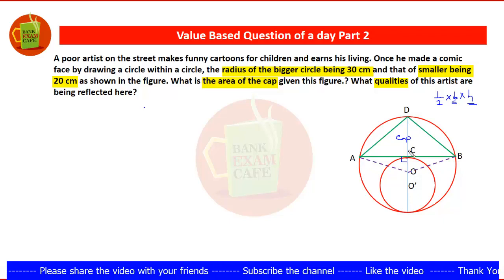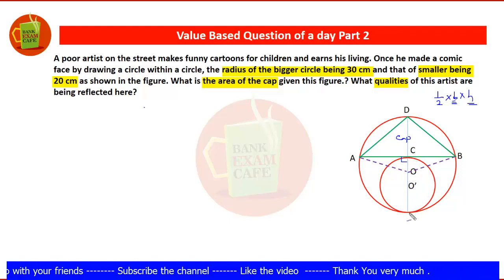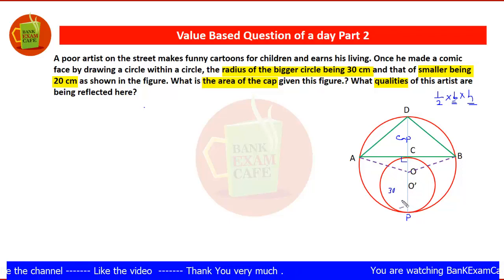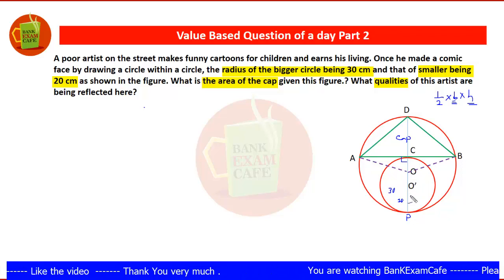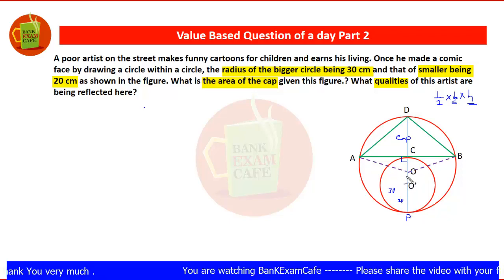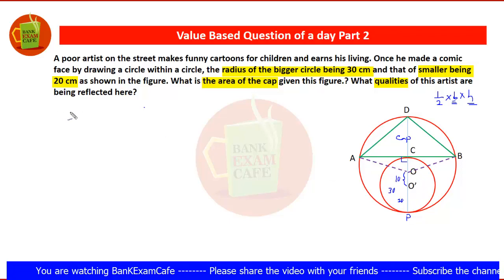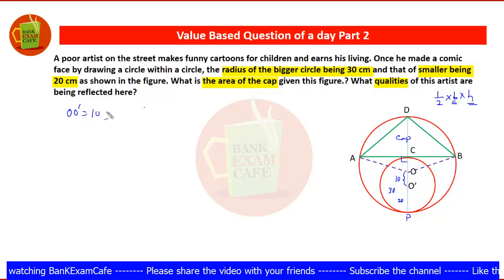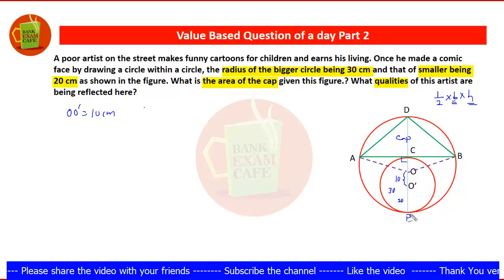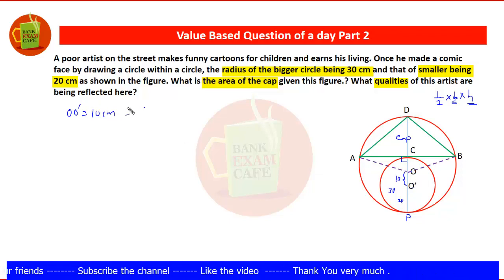Next, we need to find CD. Let's call the topmost point P. Then OP is given as 30 centimeters and O'P is given as 20 centimeters. So OP minus O'P gives us OO', which is 30 minus 20, equal to 10 centimeters. So OO' is equal to 10 centimeters.